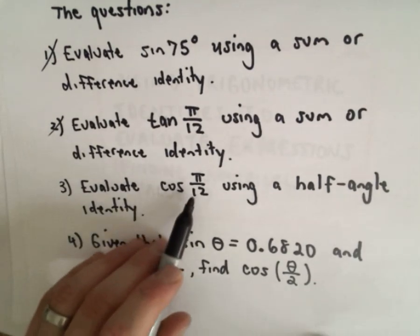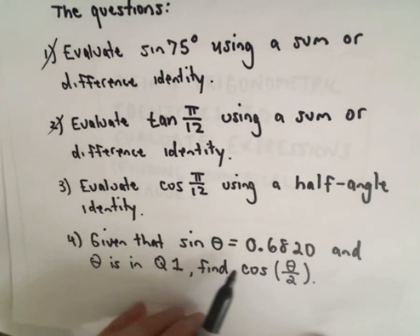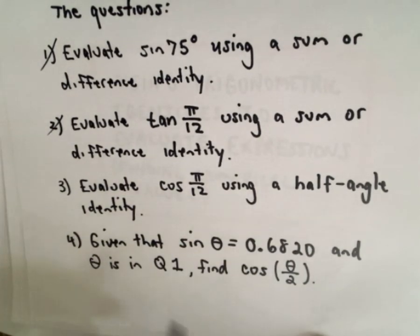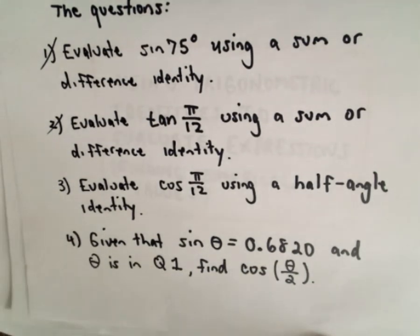So part three says evaluate cosine of pi over 12 using a half angle identity. Part four is given that sine theta equals 0.6820, theta's in quadrant one. We're going to find cosine of theta over two.